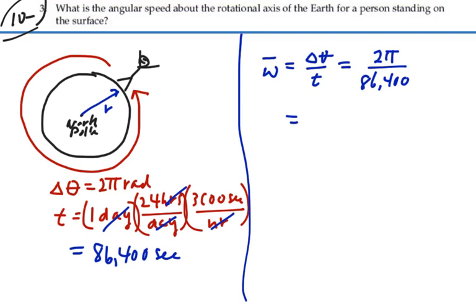So where does that come out to? 7.27 times 10 to the minus 5, 7.27 times 10 to the minus 5 radians per second.